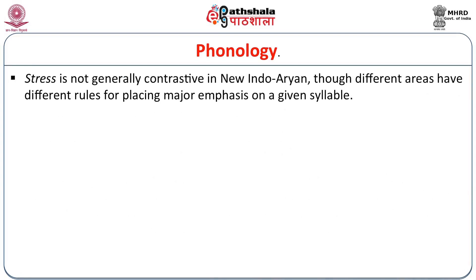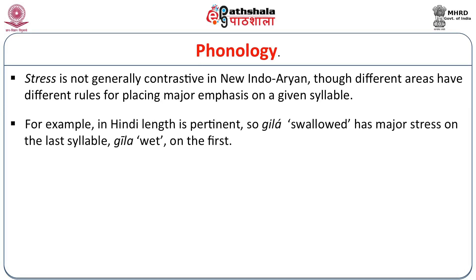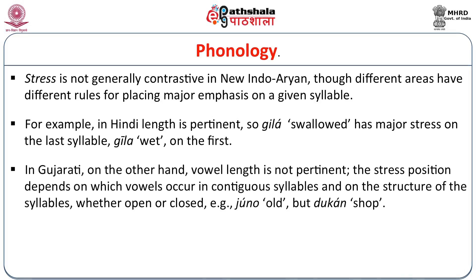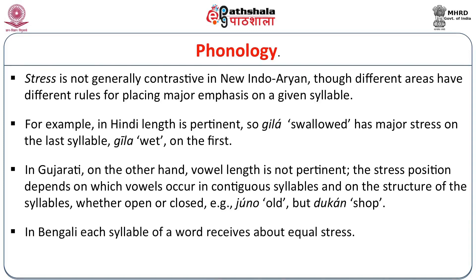Stress is not generally contrastive in New Indo-Aryan, though different areas have different rules for placing major emphasis on a given syllable. For example, in Hindi, length is pertinent: gila meaning 'swallowed' has major stress on the last syllable, whereas gila meaning 'wet' has it on the first syllable. In Gujarati, on the other hand, vowel length is not pertinent. The stress position depends on which vowels occur in contiguous syllables and on the structure of the syllables, whether open or closed — for example, juna (wall) but dukan (shop). In Bengali, each syllable of a word receives about equal stress.